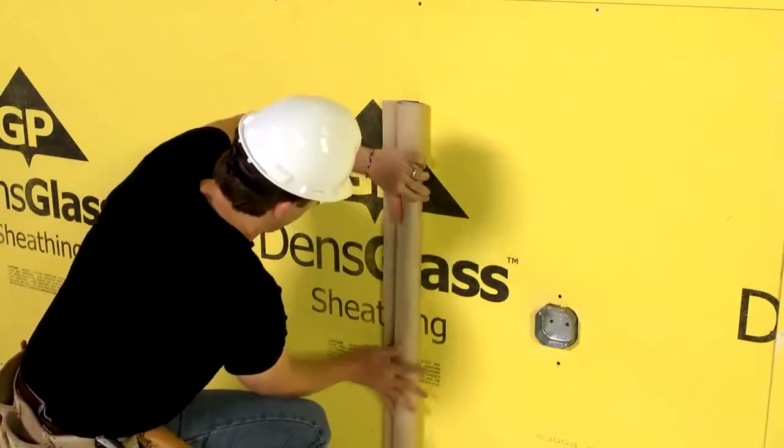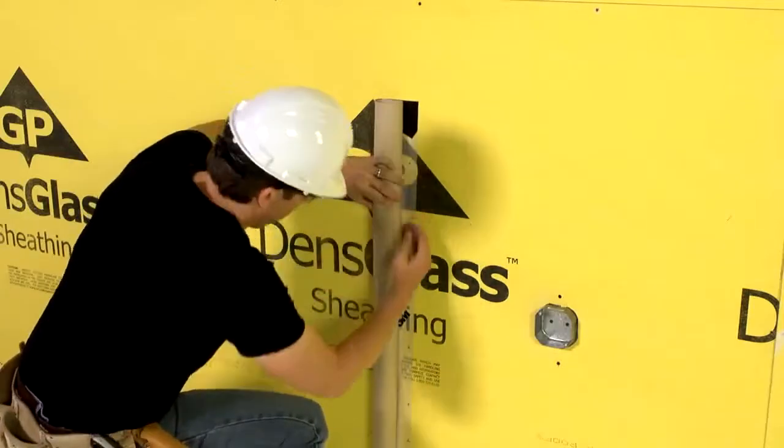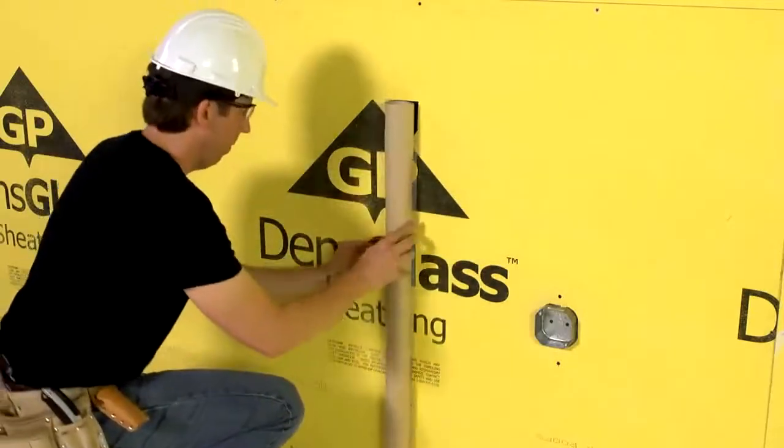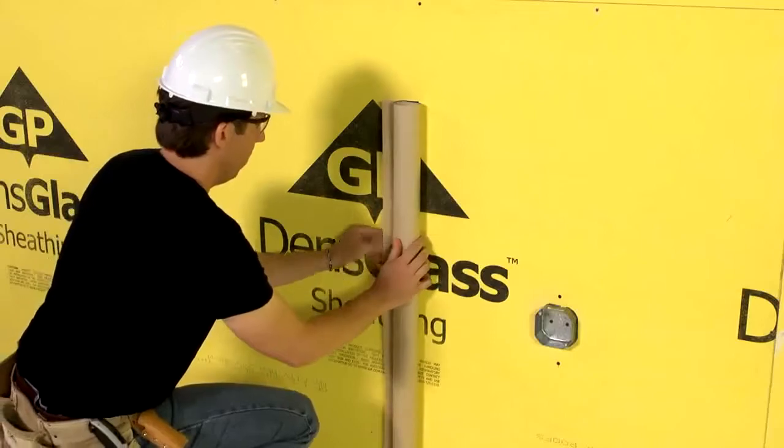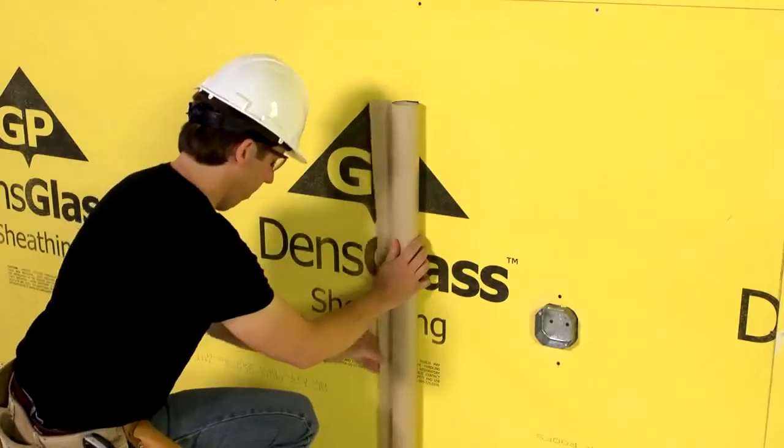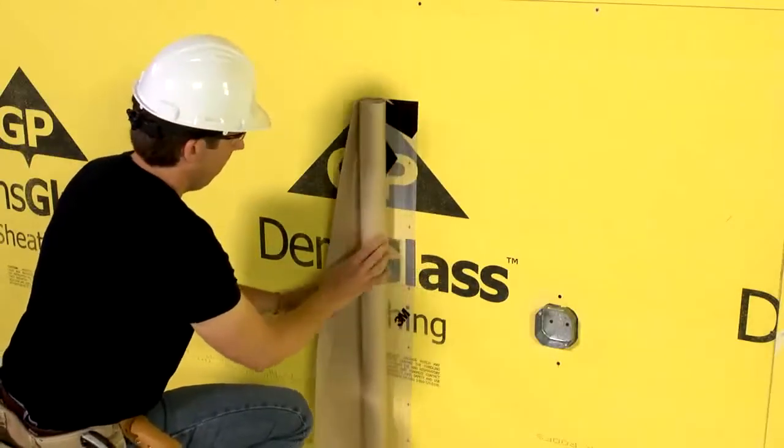You can apply the membrane horizontally as shown here or vertically as will be demonstrated later. Line and roll the membrane back against the exposed adhesive, adhering the starter strip in place against the wall.